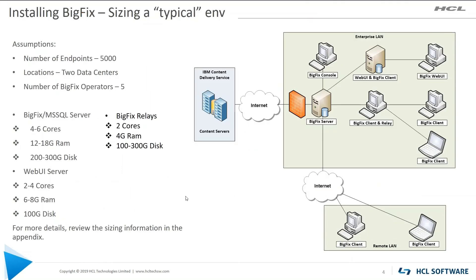Some sizing considerations. For a typical environment — around 5,000 endpoints, a couple of data centers, five console operators — you're looking at a BigFix server with four to six cores, 12 to 18 gig of RAM, and 200 to 300 gig of disk. If you're using tools like OS deployment and you have lots of images, you may need to increase that size.